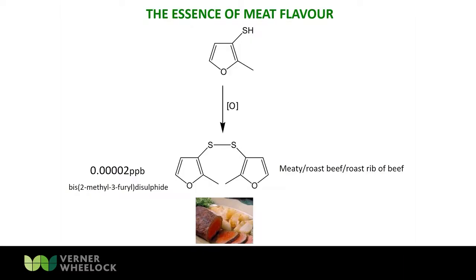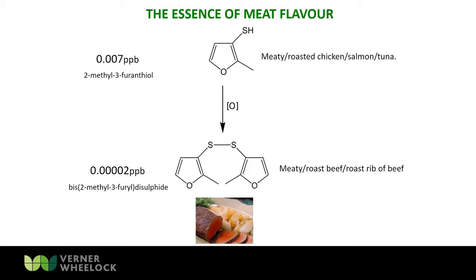1.6 million years is about the length of time that Homo sapiens have been roasting meat, so you don't need many molecules of this to get roast beef. It's formed from its monomer, 2-methyl-3-furanethiol, which has more of a chicken, salmon, tuna character — but again a very low threshold, equivalent to about one second in 10,000 years. Still a very potent flavor chemical.